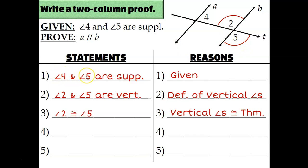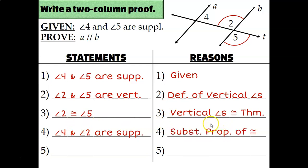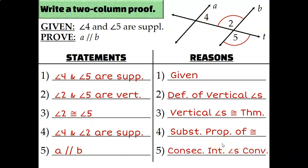Since 5 is the same thing as 2, I can substitute 2 anywhere I see a 5. So instead of saying angle 4 and angle 5 are supplementary, I can say angle 4 and angle 2 are supplementary. The reason that allows me to do that is the substitution property. Now that I've shown consecutive interior angles are supplementary, I can conclude that line A and line B are parallel because of the consecutive interior angles converse.